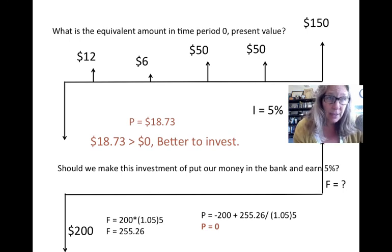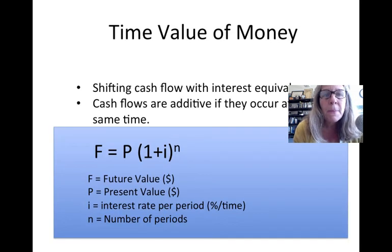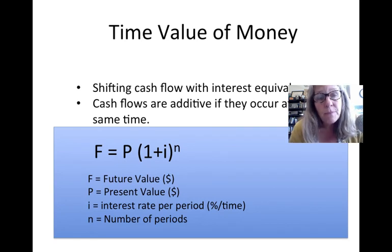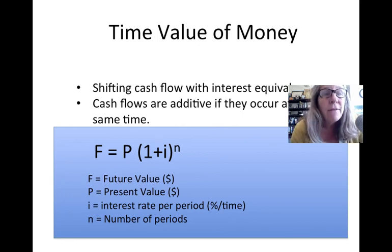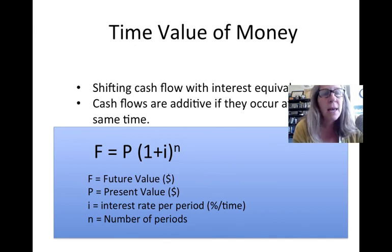That was a lot of calculations. The key takeaways are: the most important equation in engineering economy is F = P(1+i)^n, and cash flows occurring at the same point in time can be added together. These are the most important equations to know, and you'll use them throughout engineering economy.